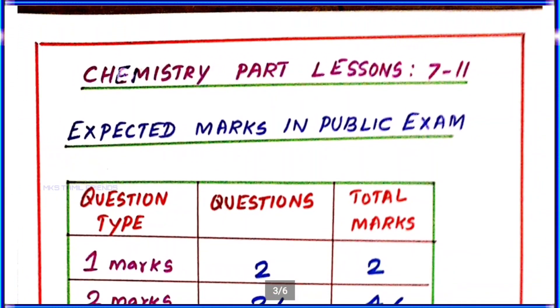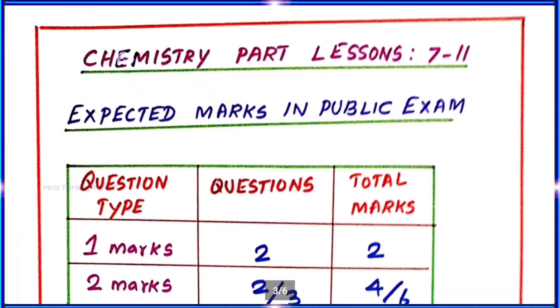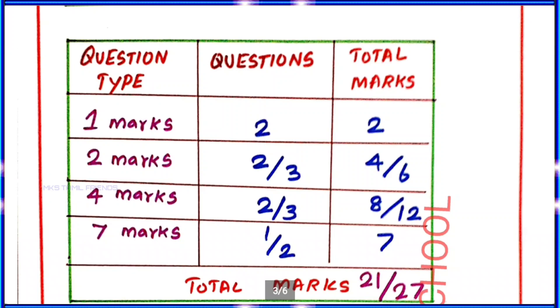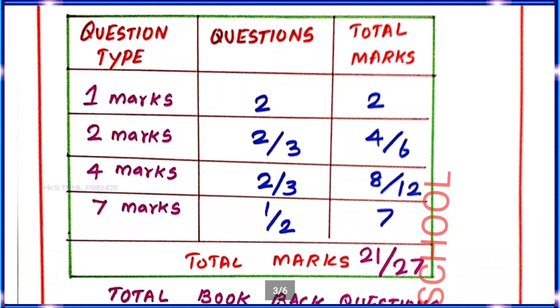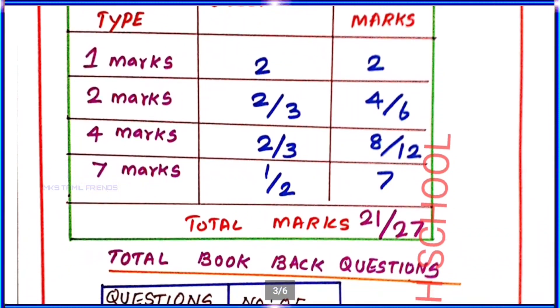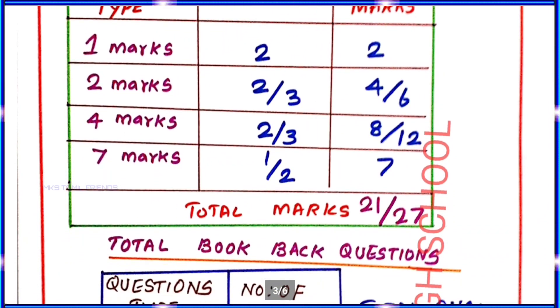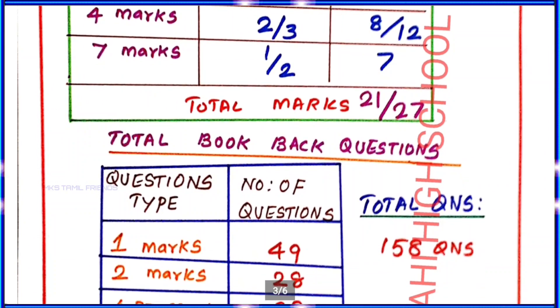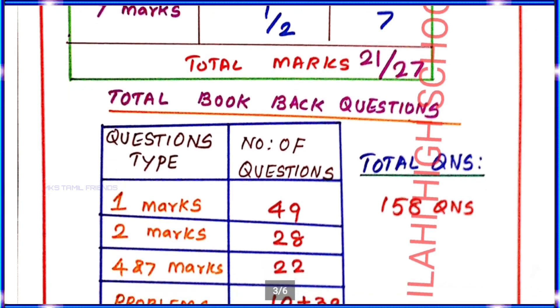Now let's look at Chemistry, covering chapters 7 to 11. These are the Accepted Marks in Public Exams. Question types: 1 Mark, 2 Marks, 4 Marks, and 7 Marks. Let's see how many total marks are covered.